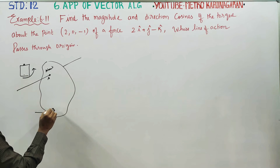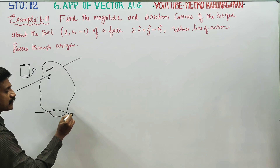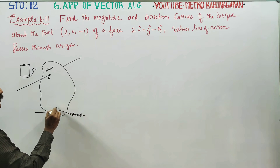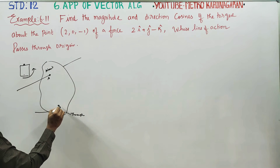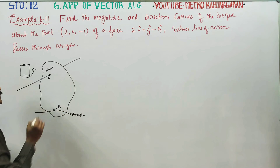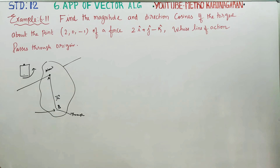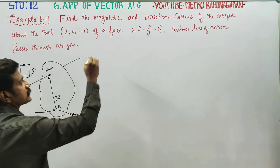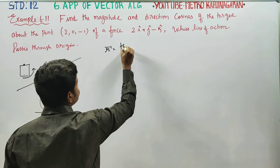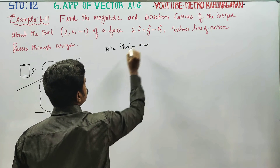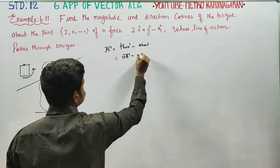About the point: if you join the point through which the force passes to the point about which torque is calculated, that gives the R-vector. The formula is R-vector equals OB-vector minus OA-vector.